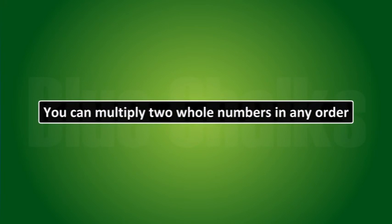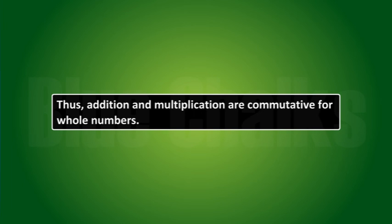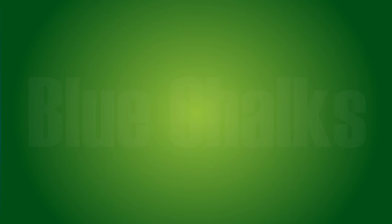You can multiply 2 whole numbers in any order. We say multiplication is commutative for whole numbers. Thus, addition and multiplication are commutative for whole numbers.